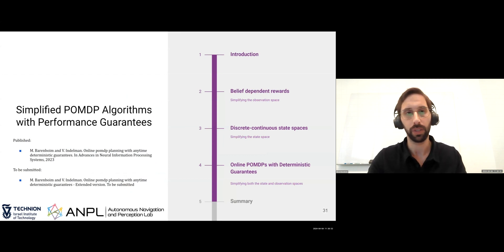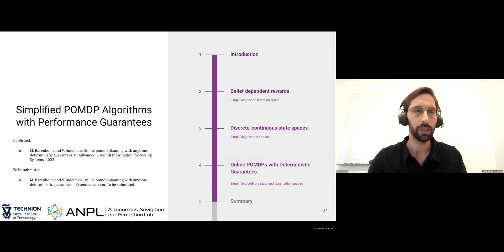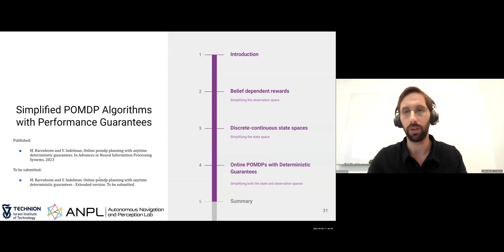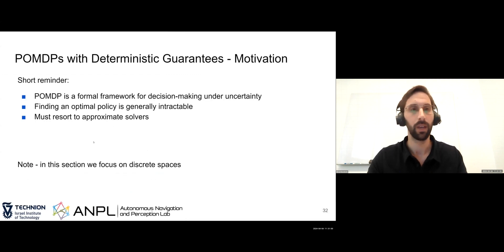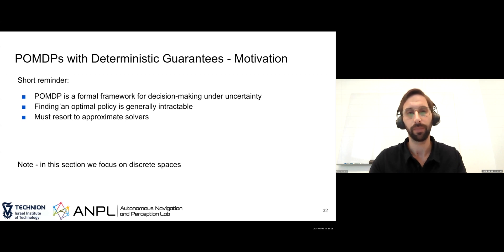Let's move to the third part of this lecture, where we use insights from both simplifying the observation space and simplifying the state space, combining them into a single algorithm. This is based on our published work in ECAI, and we are currently working on an extended version to be submitted. As a reminder: POMDP is a formal framework for decision making under uncertainty, and finding an optimal policy is generally intractable, so we must resort to approximate solvers. In this section we only consider discrete spaces.